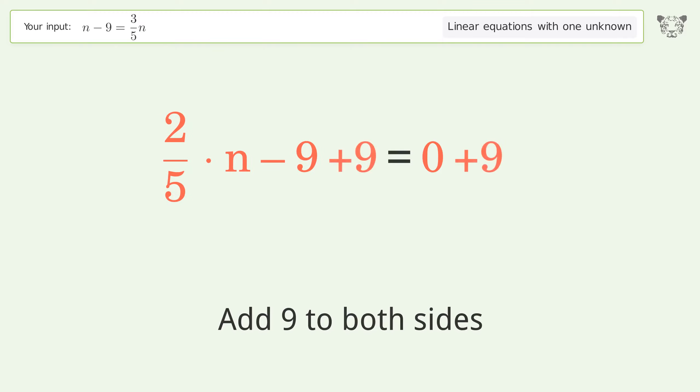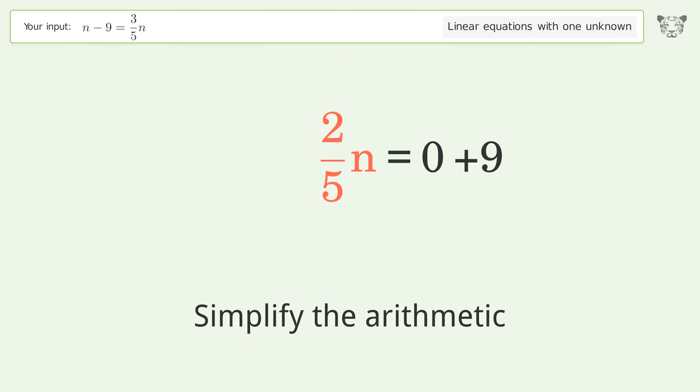Group all constants on the right side of the equation. Add 9 to both sides. Simplify the arithmetic.